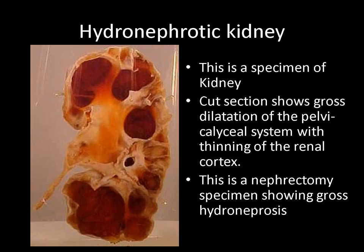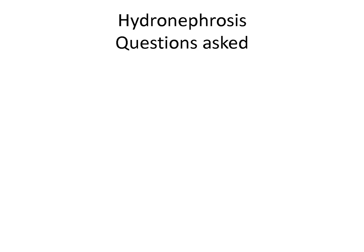The next specimen is again a specimen of kidney because of the classical bean-shaped organ and the presence of the hilum, and the ureter is very clearly seen attached in this specimen. The cut surface shows gross dilatation of the pelvicalyceal system with thinning of the renal cortex. Hence I call this as a nephrectomy specimen due to gross hydronephrosis.